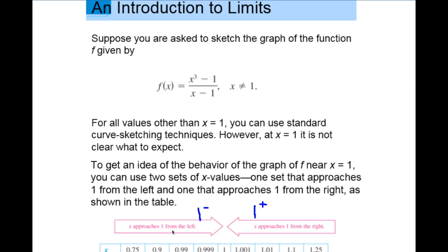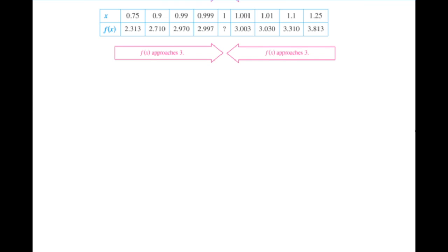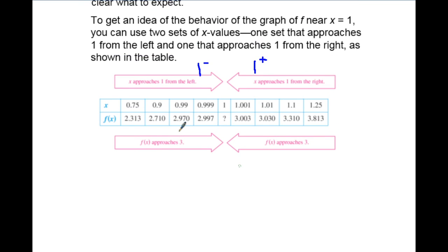You can see in our table of values we're plugging in values, and we're going to use notation to represent these things. If x approaches one from the left, you'll see a one with a little negative exponent. If it approaches from the right, you'll see a one with a little positive exponent. This negative exponent means we're approaching from numbers less than one, while the positive exponent means we're approaching from numbers greater than one.